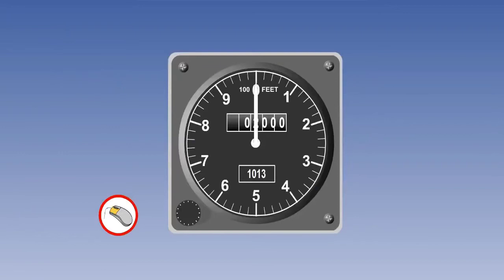The sensitive altimeter also incorporates a variable subscale, which can be manually controlled to set a required pressure datum. The relevance of this facility is discussed in the lesson on altimeter pressure settings. Let's take this opportunity to see how changing the altimeter subscale changes the indicated altitude.